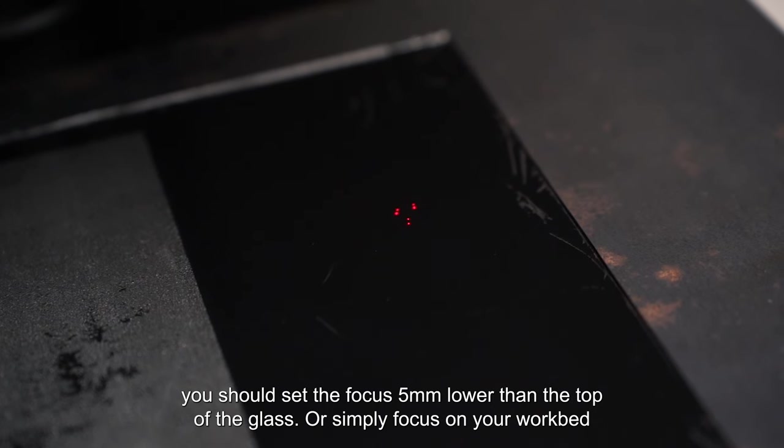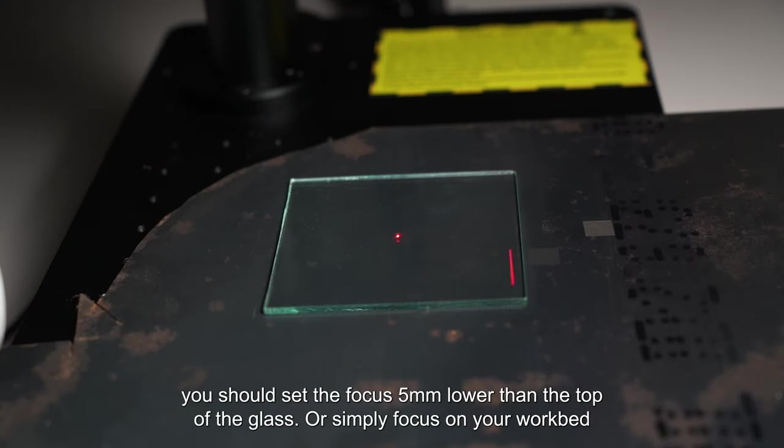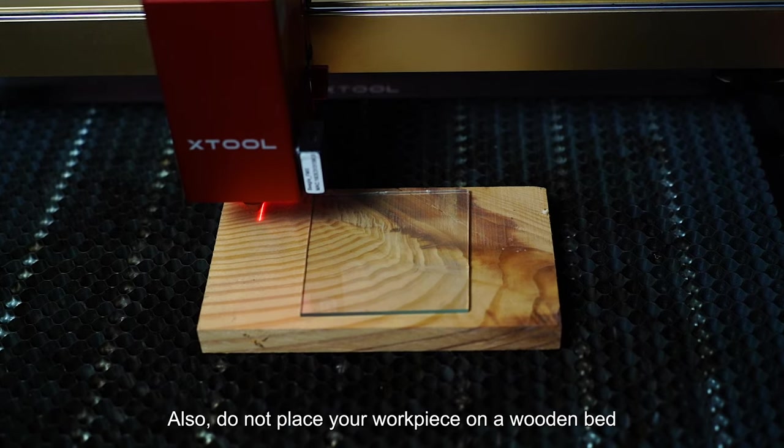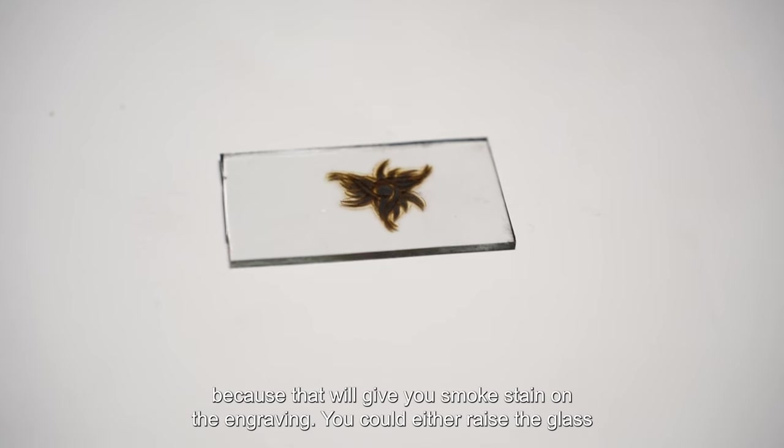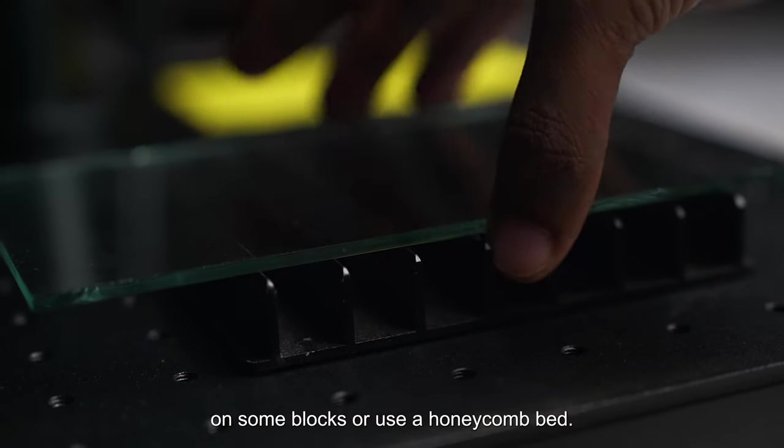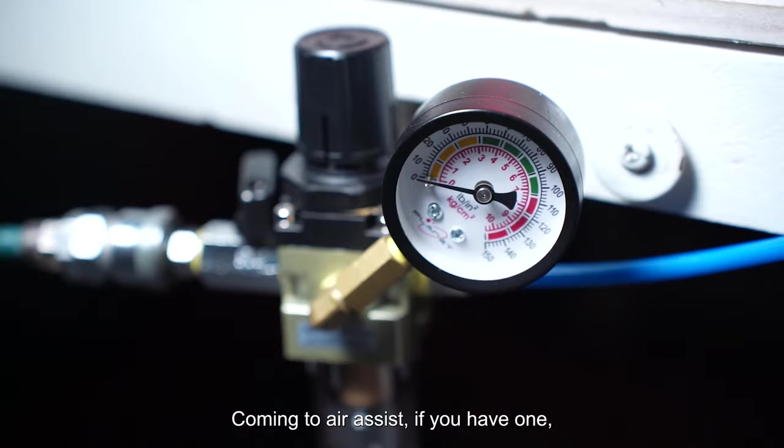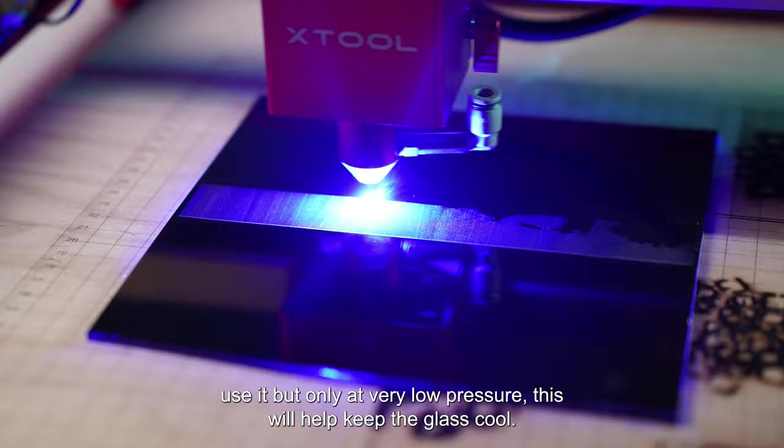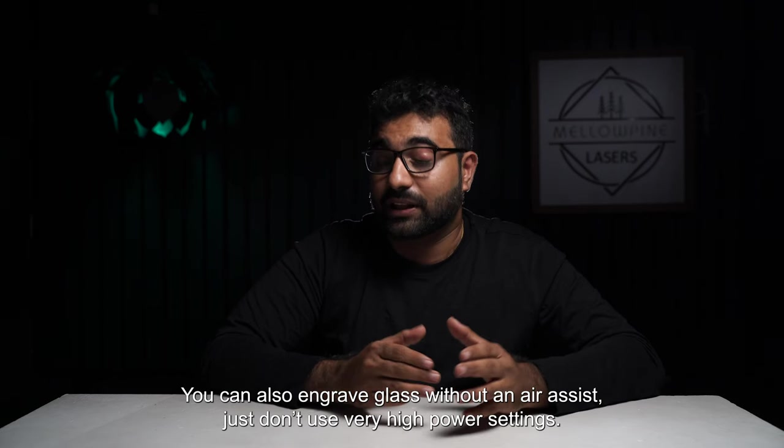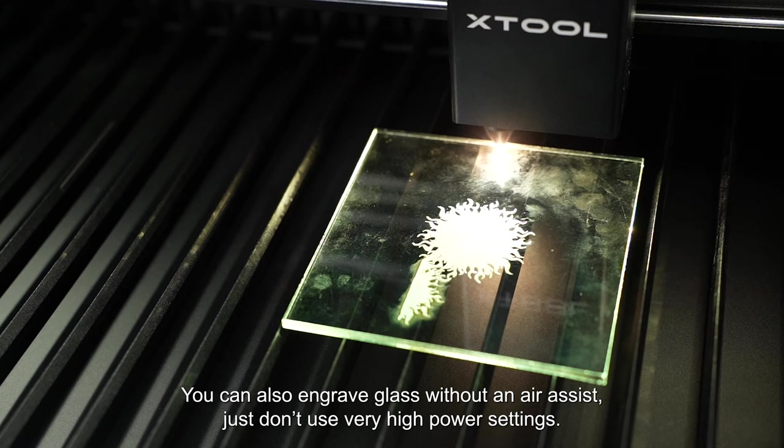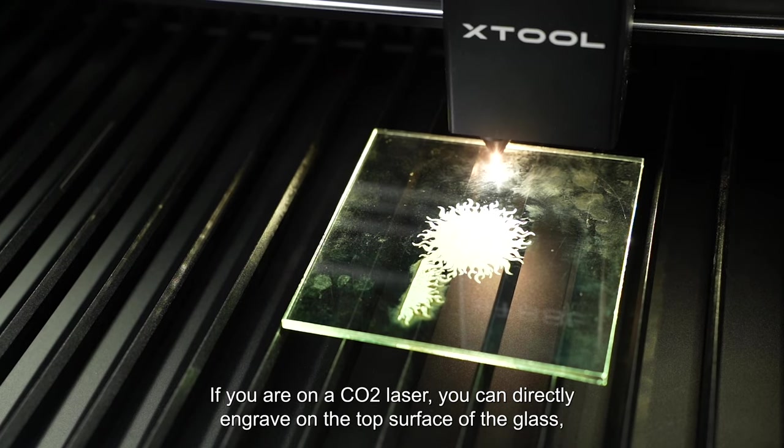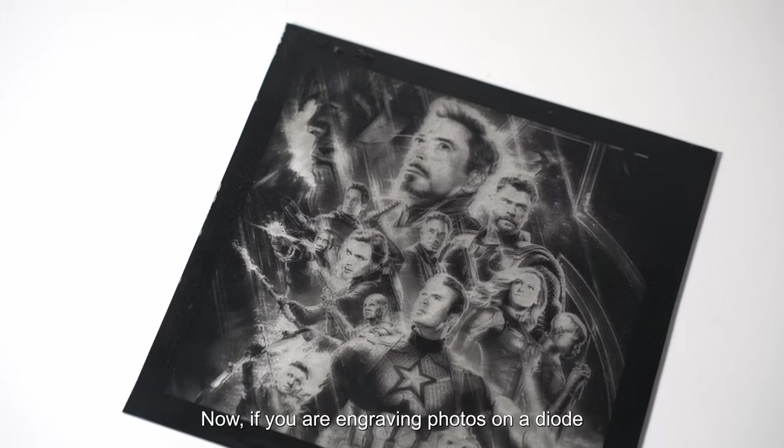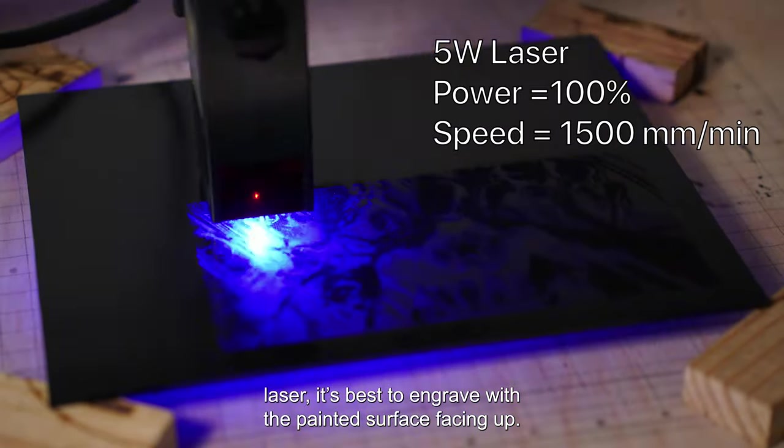This means you need to set the focus at the bottom surface of the glass. For example, if you are engraving a 5 millimeter thick glass, you should set the focus 5 millimeter lower than the top of the glass, or simply focus on your work bed or whatever you have under the glass. Also do not place your workpiece on a wooden bed because that'll give you smoke stain on the engraving. You could either raise the glass on some blocks or use a honeycomb bed. Coming to air assist: if you have one, use it but only at very low pressure. This will help keep the glass cool. You can also engrave glass without an air assist - just don't use very high power settings. If you are on a CO2 laser, you can directly engrave on the top surface of the glass. Place it on the work bed and hit go. If you're engraving photos on a diode laser, it's best to engrave with the painted surface facing out.